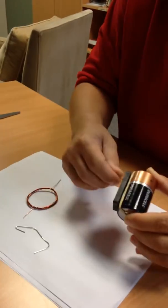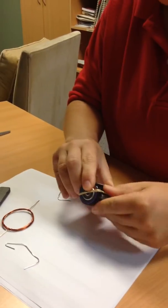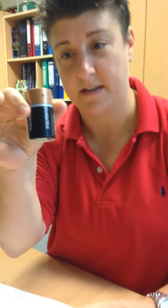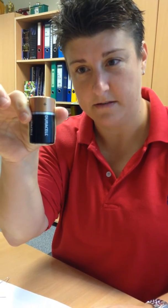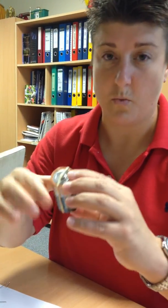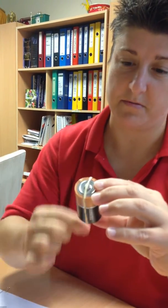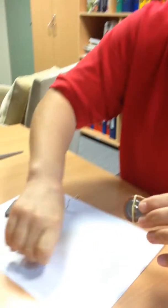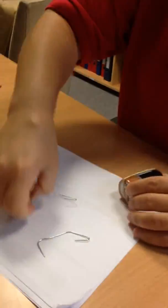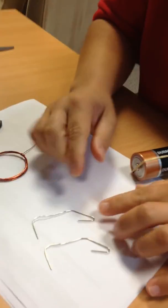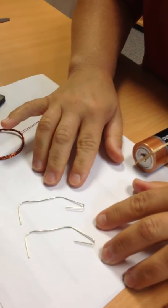So here's how you make it. All you need is a D cell battery, one rubber band, and you're going to wrap the rubber band around the battery, two paper clips bent, unfolded and bent to make this shape,